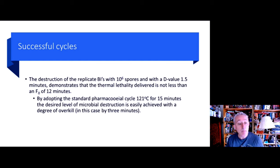So what makes a successful autoclave cycle? Well, we need to be able to demonstrate the destruction of the biological indicator, which we prove by subculturing it after it's been through the autoclave cycle. And we should be able to run a standard pharmaceutical cycle at 121 degrees for 15 minutes, and easily achieve the desired level of microbial destruction.